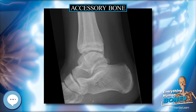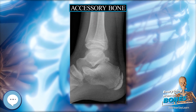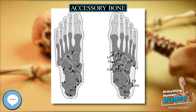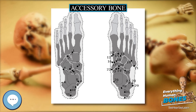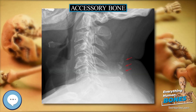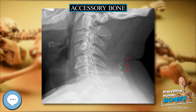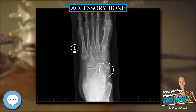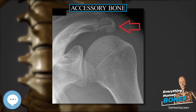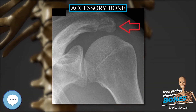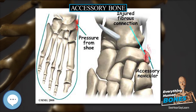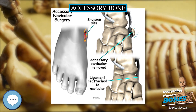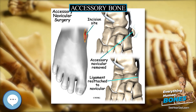The os trigonum, or accessory talus, represents a failure of fusion of the lateral tubercle of the posterior process of the talus bone. It is estimated to be present in 7–25% of adults. It can be mistaken for an avulsion fracture of the lateral tubercle of the talus, a shepherd fracture, or a fracture of the styloid process. In most cases, os trigonum will go unnoticed, but with some ankle injuries it can get trapped between the heel and ankle bones, irritating the surrounding structures and leading to os trigonum syndrome. Less common accessory bones are found in other locations including the neck, shoulder, vertebral column, and knee.